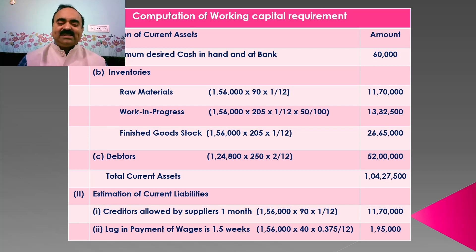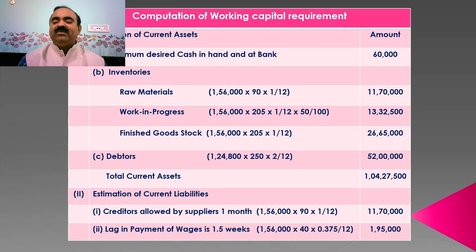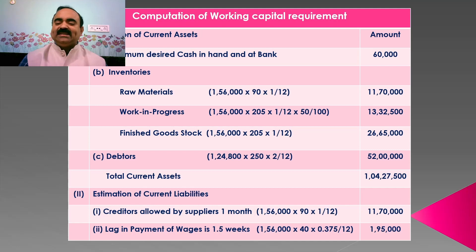The amount to be invested in debtors is determined by multiplying 1,24,800 with selling price Rs. 250 and accounts receivable period 2/12. Here, 20% of output is sold against cash, hence we have taken credit sale level as 1,24,800. Thus, we got the debtors amount of Rs. 52,00,000. After adding all current assets values, we derived total current assets as Rs. 1,24,27,500.